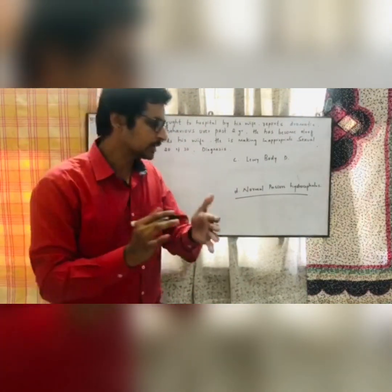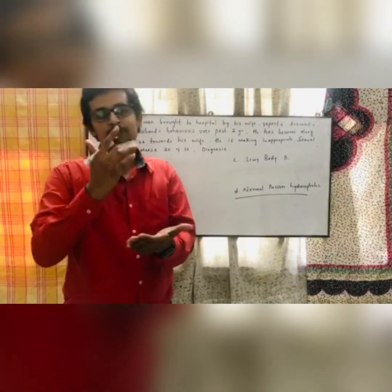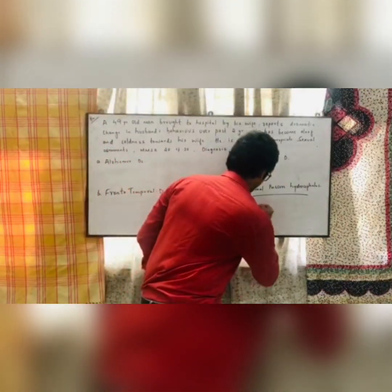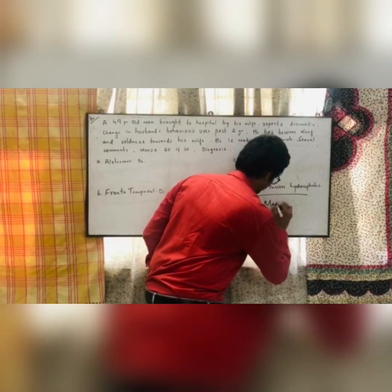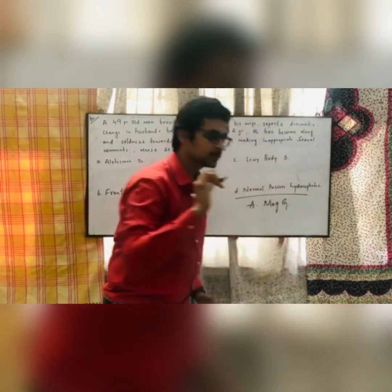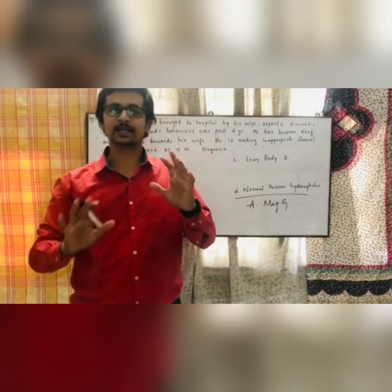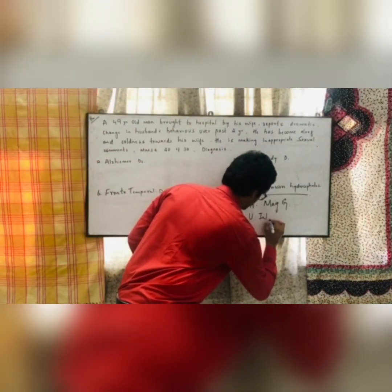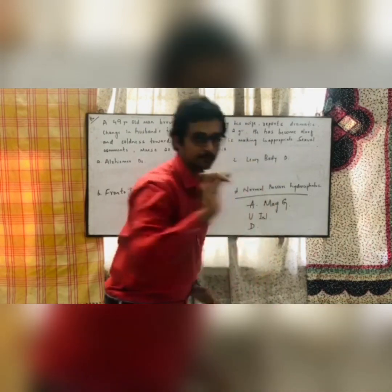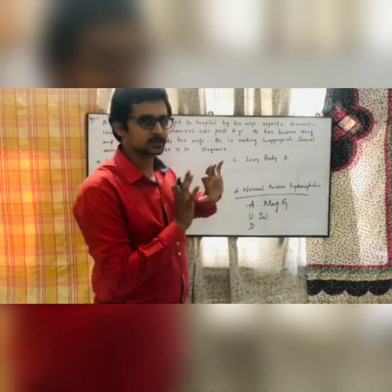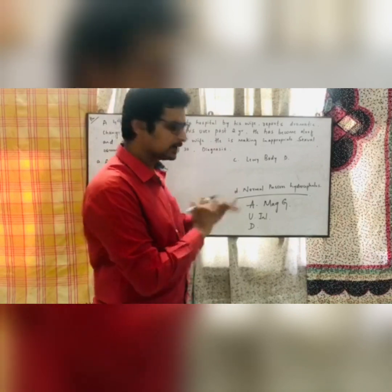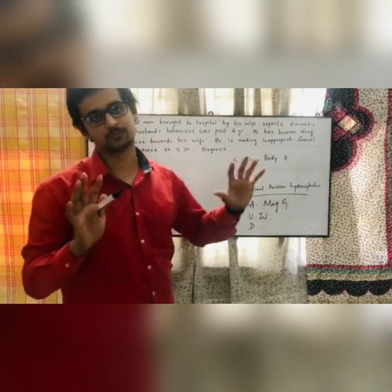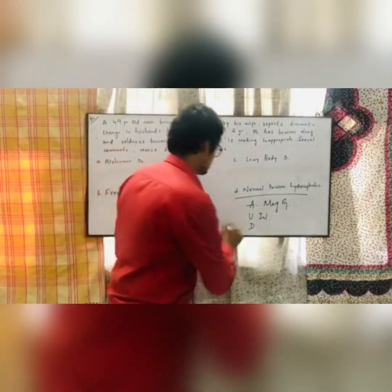In NPH, the patient should have gait problems — a prominent magnetic-type gait — along with urinary incontinence and dementia. Scanning through the question, there is no ataxia and no urinary abnormalities, so this is not NPH. You have ruled out one option.